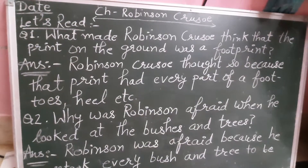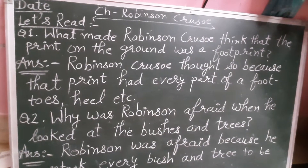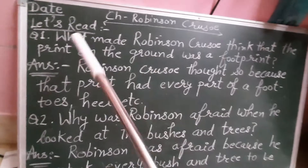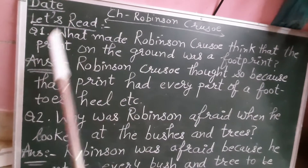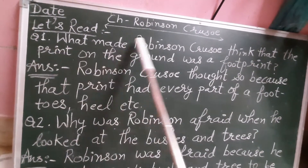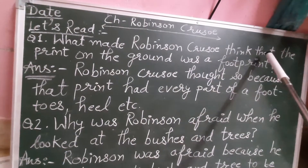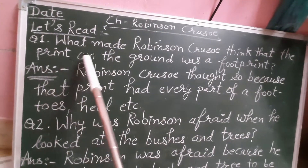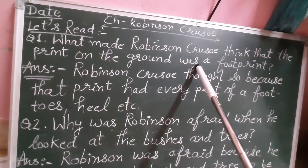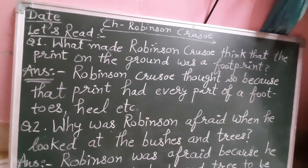Good morning students. We are on the exercise of chapter Robinson Crusoe and first reading. Question number one: what made Robinson Crusoe think that the print on the ground was a footprint?